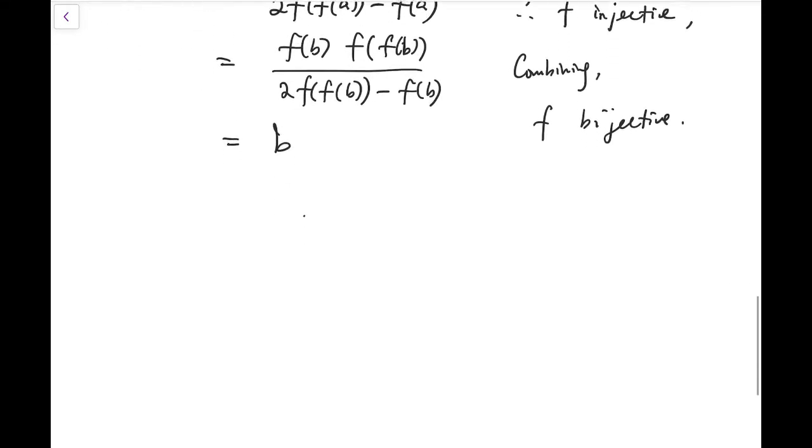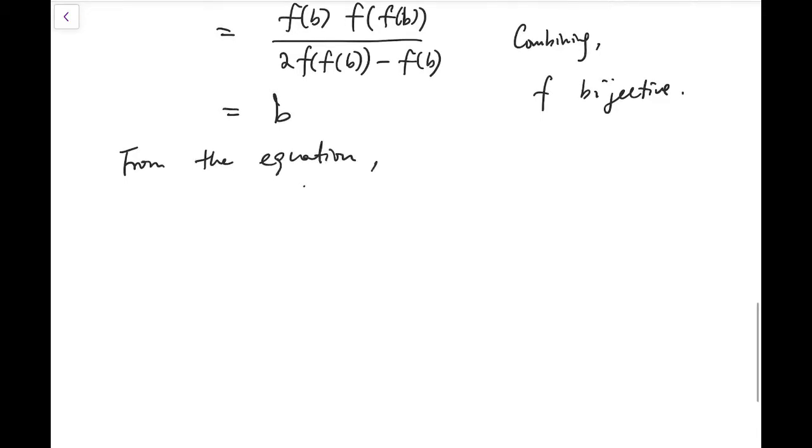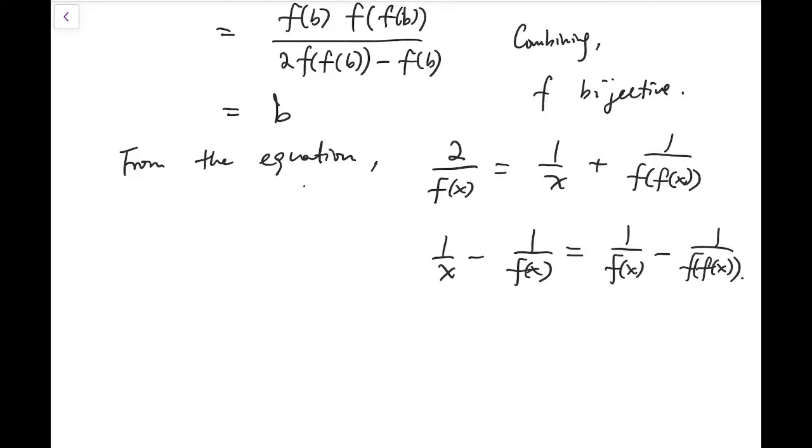So, having f being bijective allows me to define the sequence in a more general way. From the equation, let's get back to the form before we establish the AP first. From the equation, I can rewrite 2 over f(x) equals this. And I can now define sequence where n, it's not just a natural number, but also an integer. By a_0 equals 1/x, and a_n is equal to 1 over f(x) composite by n times.